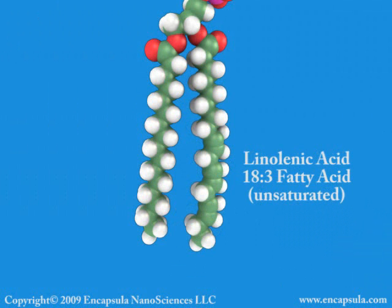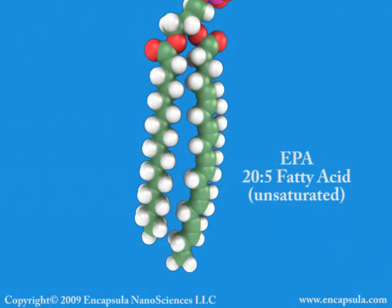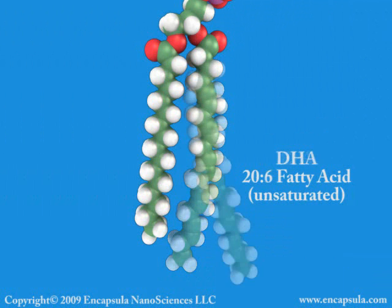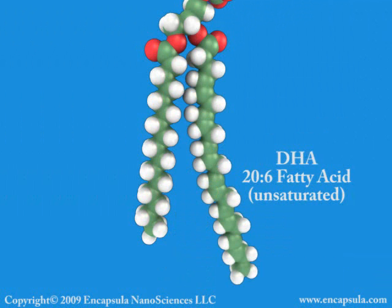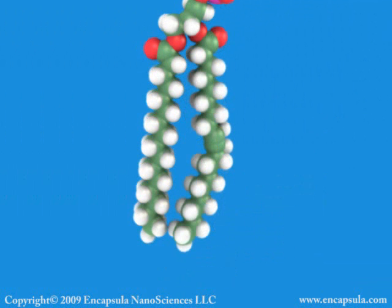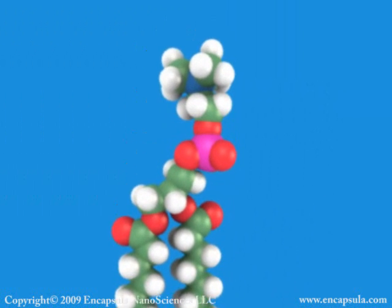Each double bond causes a kink in the carbon chain of unsaturated fatty acids. The most common natural phospholipids contain palmitic and oleic acids. However, synthetic phospholipids can be synthesized with any combination of fatty acids.